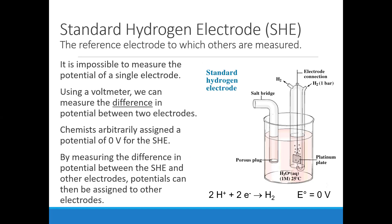We have a small problem when it comes to cell potentials: we cannot measure the potential on a single electrode. We cannot measure zinc's potential or copper's potential individually. But using a voltmeter, we can measure differences in potential. Imagine we have no way of measuring height directly, but we can measure differences in height — that's the same idea here.